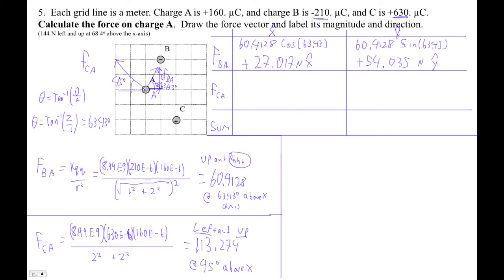Now we're going to find FCA. So let's draw the components for this guy. This guy goes left and then up. So this component at the end of the day will be negative. This component here will be positive. So this is 113.274, and then this x component is the cos of 45.